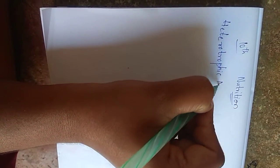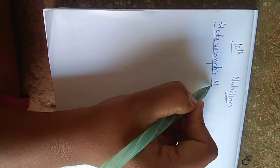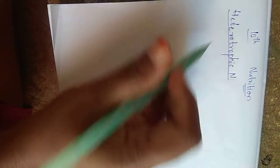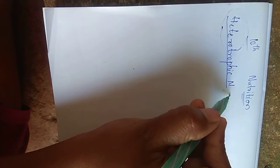Heterotrophic nutrition. Till now in plants, whatever we have seen is autotrophic nutrition, that means plants themselves prepare food. Heterotrophic means they will not prepare their own food. Example: animals.